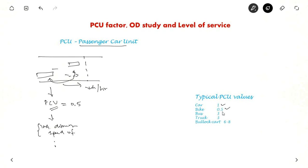Bus and trucks are 3. You can imagine like three cars can make a bus or a truck. So 3. And bullock cart is 6 to 8 depending on the size of the bullock cart. Because the bullock cart goes very slow, the PCU factor is very high. So these are the typical PCU values used for calculations.